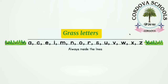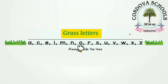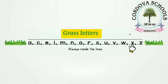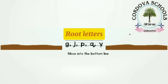The letters which are written between the two grass lines are called grass letters. There are thirteen grass letters in lowercase: a, c, e, i, m, n, o, r, s, u, v, w, and x, z.